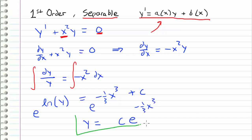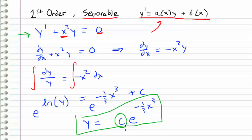So this would be our general solution to this differential equation. I call this a general solution because we don't have an initial condition to replace the c with. Now if I were to specify an initial condition like y of zero is equal to y-naught, then I would be able to solve for the unknown value c in order to find a unique solution.